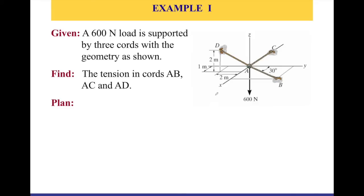Before we start the analysis, I want to draw your attention to the following. We're going to assume all forces are going outside from the point of equilibrium. So for the force from A to C — FC — it's going along the negative X-axis, so it does not have any component on the Y or the Z-axis. And also for the force FB from A to B, we're going to assume that it's going outside. Notice that the FB force is on the XY plane, so there is no Z component.